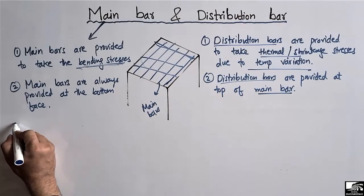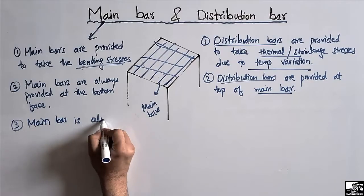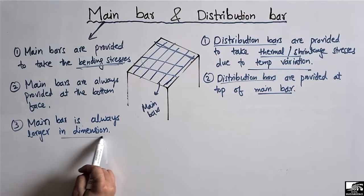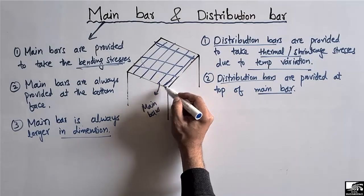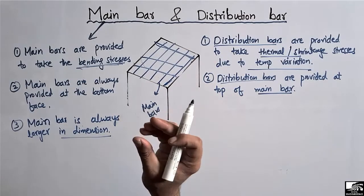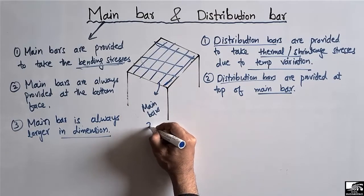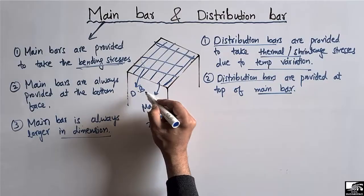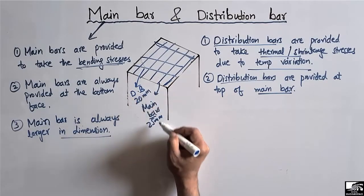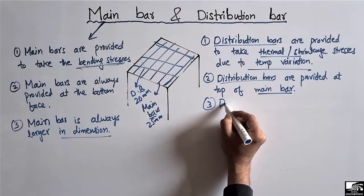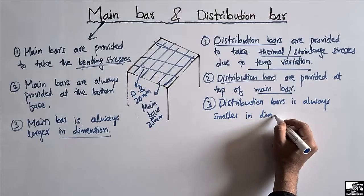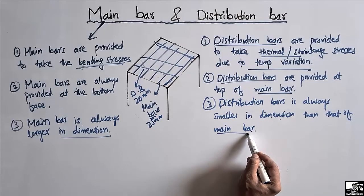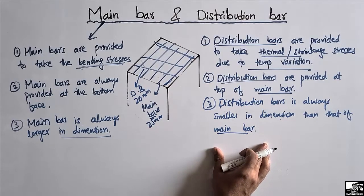The third difference is: the main bar is always larger in dimension. If we compare two bars, the main bar should always be greater in dimension than the distribution bar. For example, if the main bar is a 25 mm bar, then the distribution bar will always be less than that — it may be 20 mm. So the distribution bar is always smaller in dimension than the main bar.